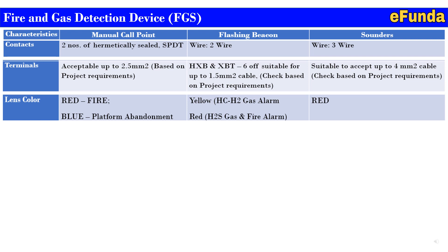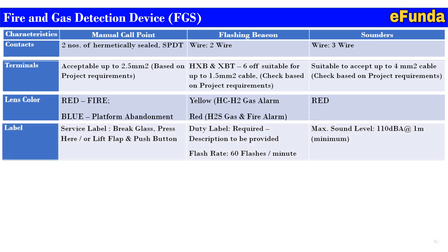Lens color for the manual call point: red for fire, blue for platform abandonment — this is related to offshore applications. For the flashing beacon, lens color is yellow for HC/H2 gas alarm and red for H2S gas and fire alarm. For the sounder, the assembly is red color. Labels for the manual call point include a service label — 'break glass' with instructions: press here or lift the flap and push down the button. For the flashing beacon, a duty label is provided with description, and the flash rate is 60 flashes per minute.